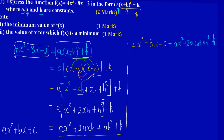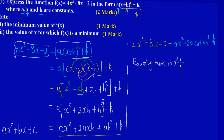Now let's equate the terms in x squared. On the left, x squared is being multiplied by 4; on the right, x squared is being multiplied by a. Therefore, a is equal to 4.